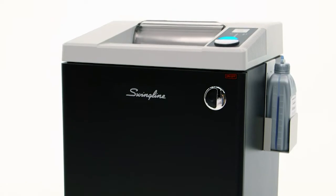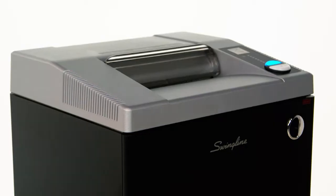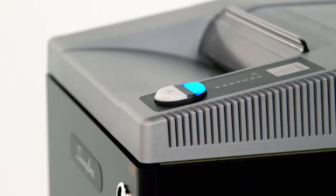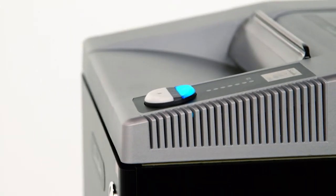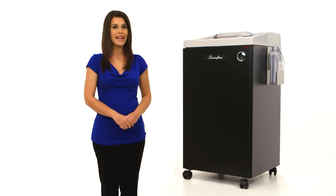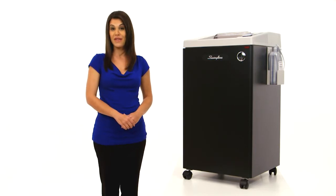The Swingline CHS 1030 High Security Shredder is a level P7 shredder and shreds up to 10 sheets at a time, turning a single letter-sized document into nearly 16,000 individual pieces, easily meeting your highest security needs and providing extra protection when shredding sensitive information.